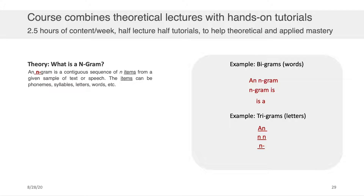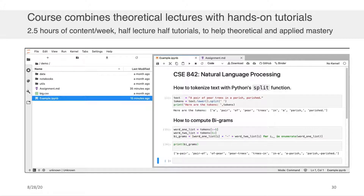This course will also have a practical component embedded within IPython notebooks shared in the course's GitLab repository, which you should all have access to. I will step you through how to obtain access to that repository, how to navigate it, and how to pull from it. Those tutorials will contain real practical examples of how you do NLP analysis in the Python programming language, such as how to tokenize text, how to compute bigrams, and so on.